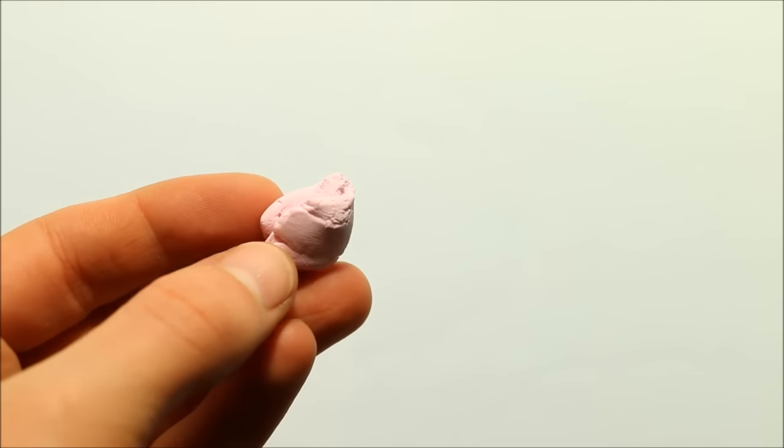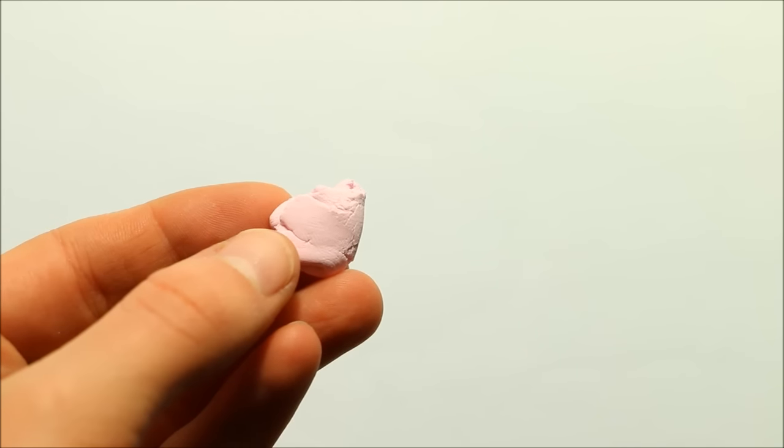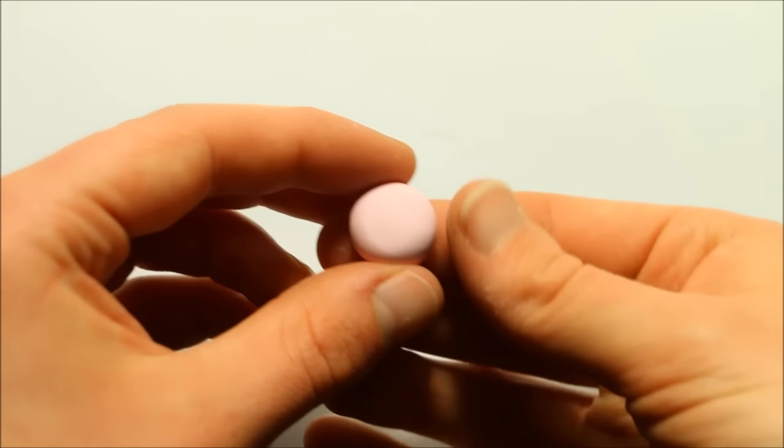Firstly, take the color you'll be wanting to use for your camera. Today I've chosen to make a pink one. Roll your piece of clay into a ball and then shape it into a square using your fingers until you're happy with it.